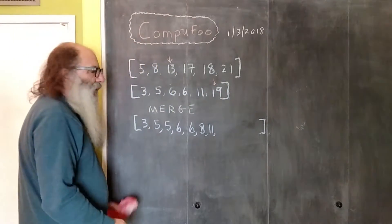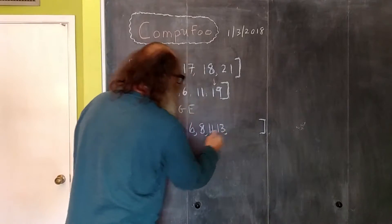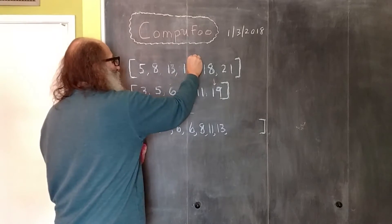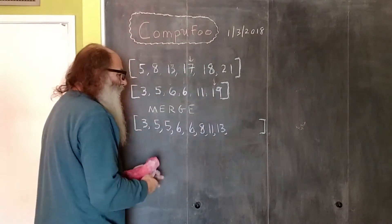Nineteen less than thirteen? That's false, so the thirteen goes in to the merged array. We increment this pointer. Nineteen less than thirteen? That's true, so the thirteen goes in to the merged array. We increment this pointer. Eighteen less than fifteen. That's true, so the seventeen goes in.